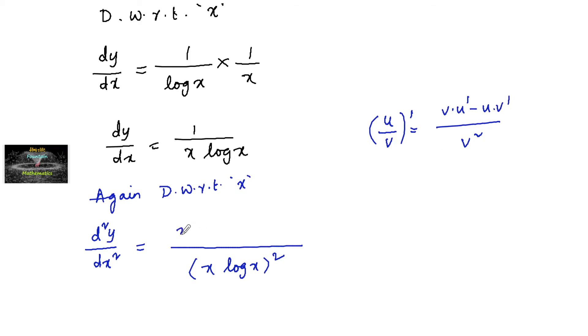So we have x log x times differentiation of 1 is 0, minus 1 times d/dx of x log x. Differentiation of x log x is x times 1/x plus log x times 1. By using the product rule: u times v' plus v times u'.